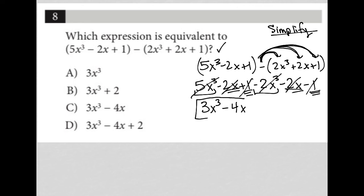So what I'm left with is 3x cubed minus 4x, and therefore the correct answer here is choice C.